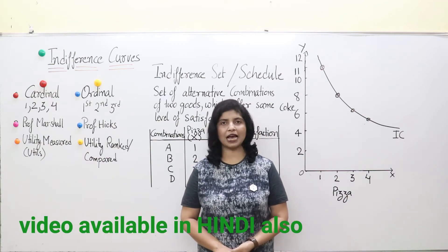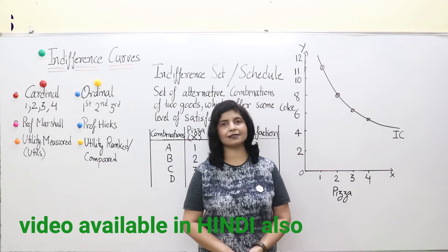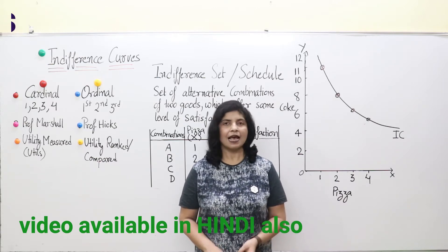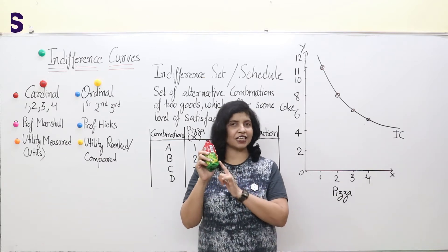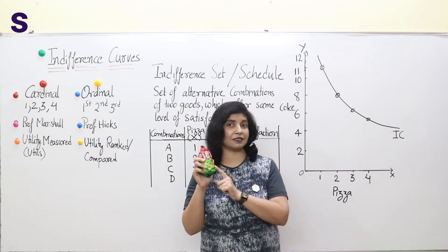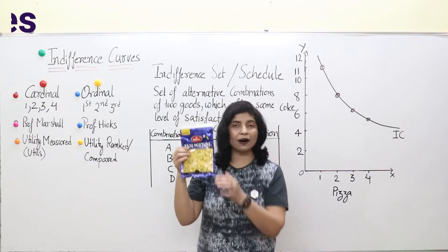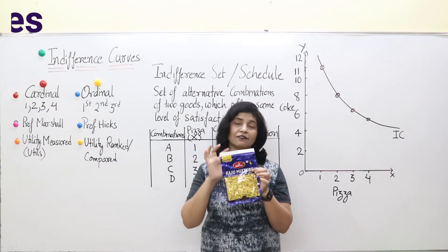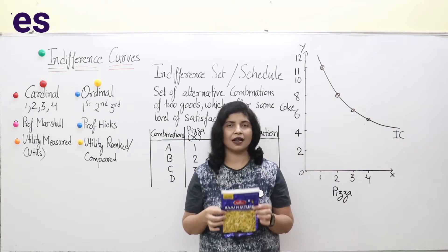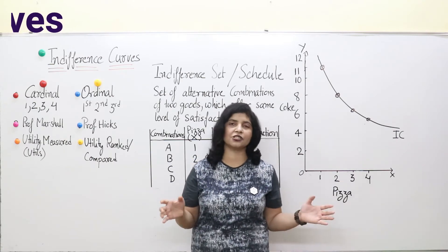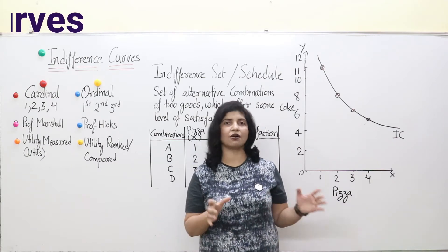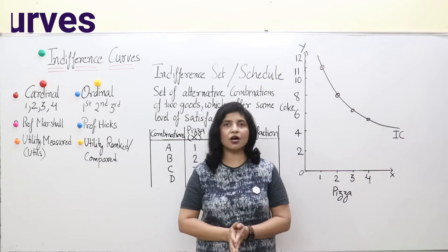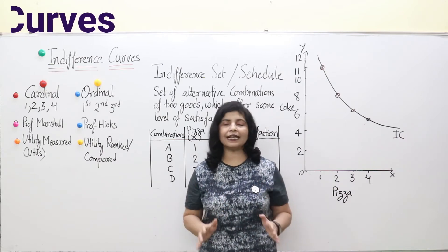Welcome to Sachi's Academy. Today we will discuss indifference curve analysis. Can I say that I got 100 satisfaction by consuming these biscuits, or 200 satisfaction by consuming this packet? No — we never say that. We just say it was good, fantastic, or delicious, because we never measure satisfaction in numerical units.